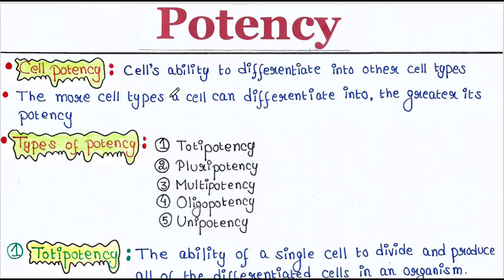The cell's ability to differentiate into other cell types is called cell potency. The more cell types a cell can differentiate into, the greater its potency.